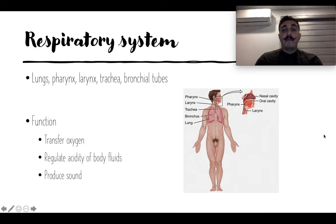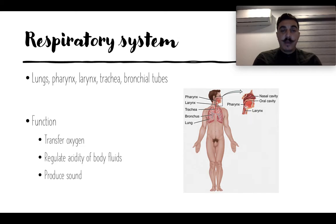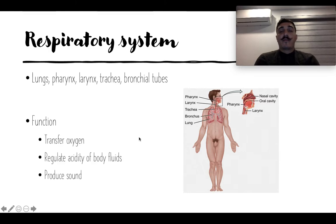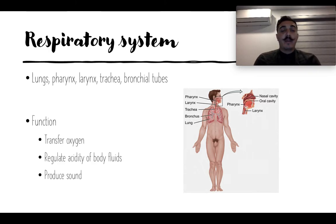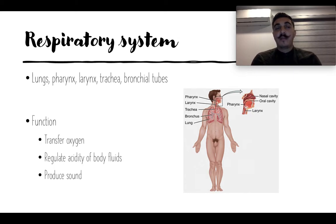The respiratory system — breathing — includes the lungs, pharynx, larynx, trachea, and bronchial tubes. Its main function is to transfer oxygen so you can breathe in and breathe out, regulate the acidity of body fluids, and produce sound — which is why you're listening to me right now.